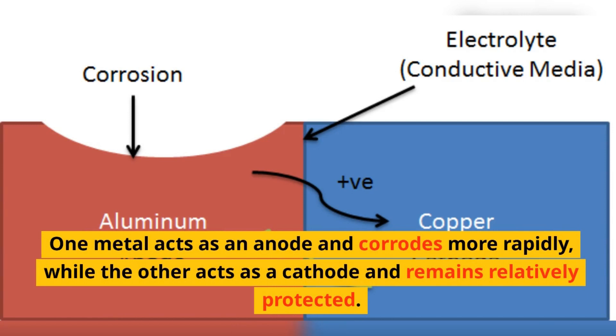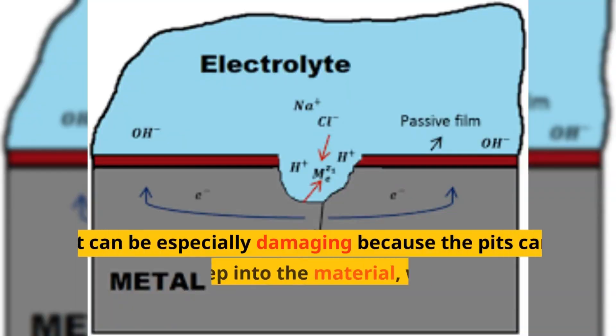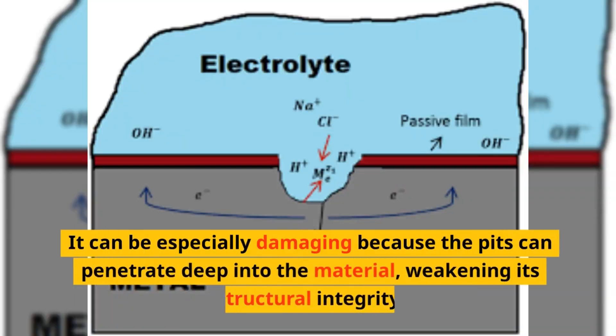Pitting corrosion: pitting is localized corrosion that leads to the formation of small holes or pits on the metal's surface. It can be especially damaging because the pits can penetrate deep into the material, weakening its structural integrity.